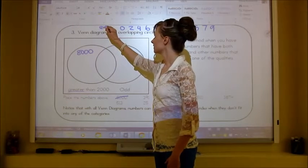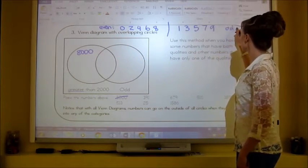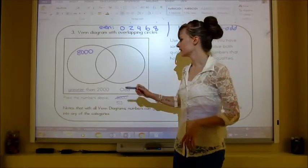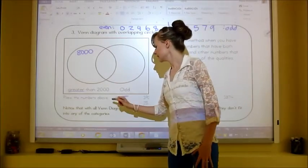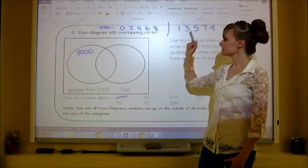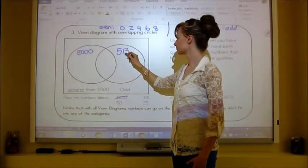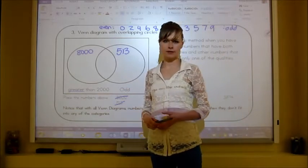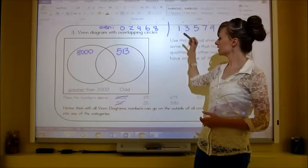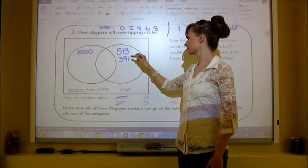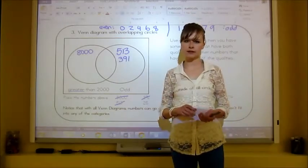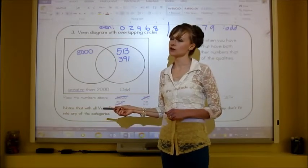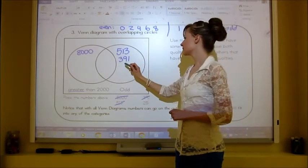513: greater than 2,000? No. Odd? It ends in 3, so yes — put it in the 'odd' circle. 391: greater than 2,000? No. Odd? It ends in 1, so yes — goes here. 25: greater than 2,000? No. Odd? Yes — put it in the 'odd' circle. Pause the video and place the remaining four numbers, then play again to check your answers.